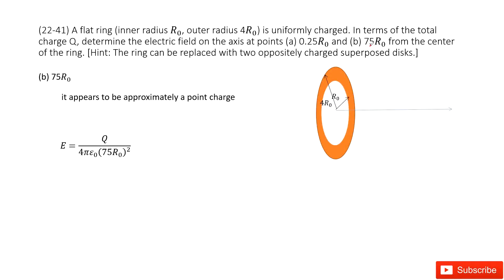The second part tells you the distance is 75 r0 from the center of the ring. This distance is really far away from the ring, so we can consider this ring as a point charge. We just use our equation for point charge electric field: the charge divided by 4πε0 times the distance squared.